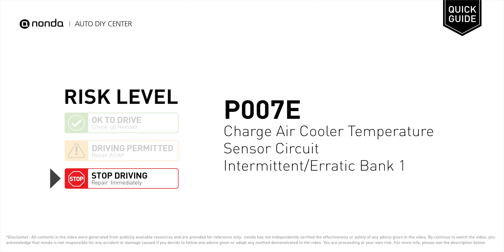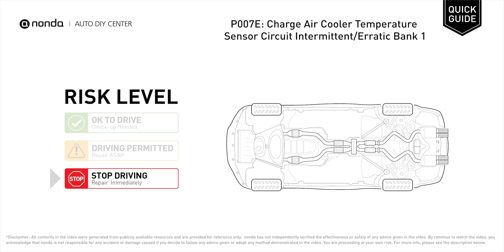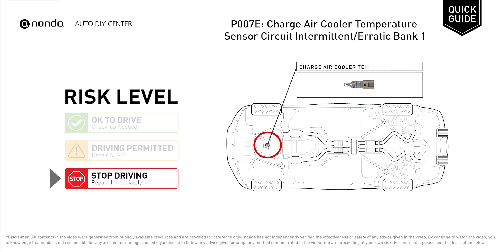P007E is a diagnostic trouble code for charge air cooler temperature sensor circuit intermittent or erratic in bank 1. Under this circumstance, stop driving and repair your vehicle immediately. It indicates that the ECM has detected an intermittent problem with the bank 1 charge air cooler temperature sensor signal.